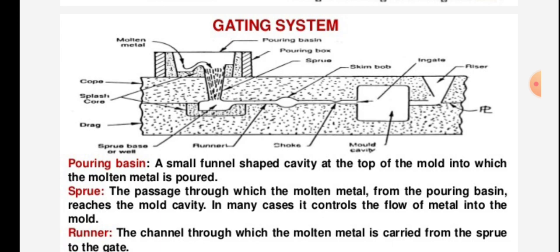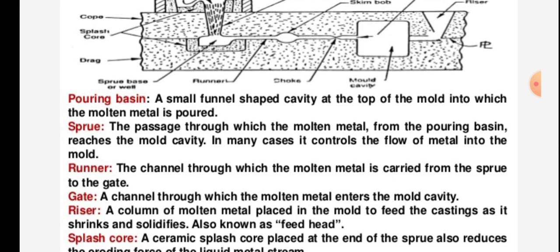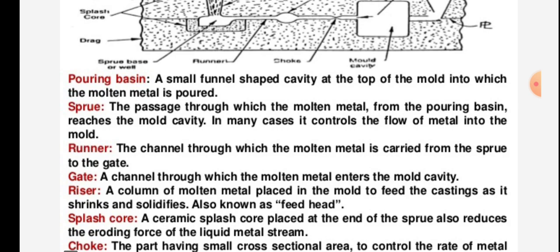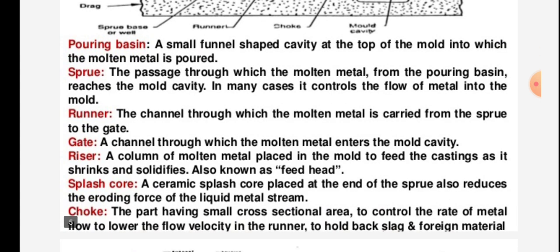The pouring basin is a small funnel-shaped cavity at the top of the mold into which the molten metal is poured. The sprue is the passage through which the molten metal from the pouring basin reaches the mold cavity. In many cases, it controls the flow of metal into the mold.